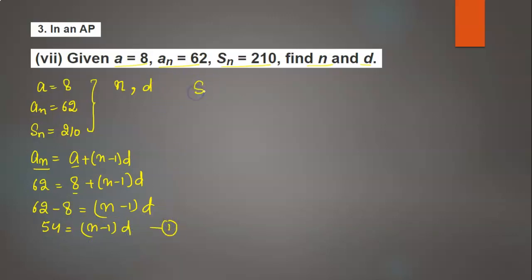Now, the formula for the sum of n terms is Sn = n/2(a + an). Since Sn = 210, we have 210 = n/2 times (8 + 62). That's n/2 times 70.